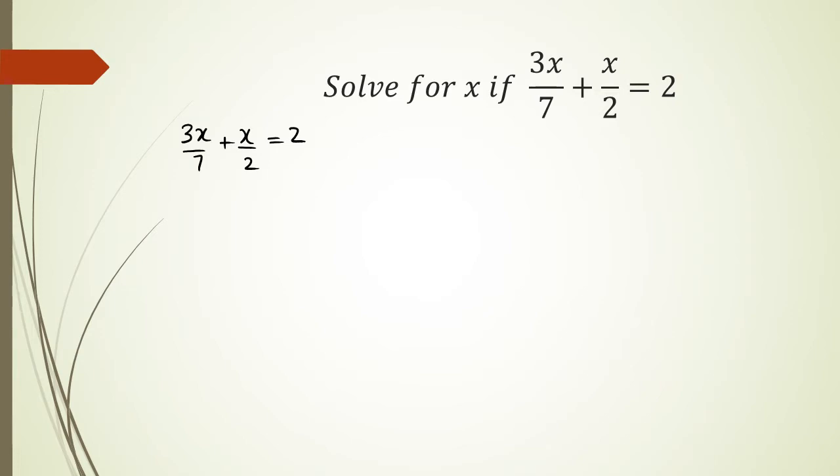So what you need to do is convert the left hand side, well convert it so that it's one fraction. And the way we can do this is we got to have common factors, sorry common denominators, for the two fractions here. Now the two numbers you're working with is 7 and 2, and your lowest common multiple for 7 and 2 is going to be 14.